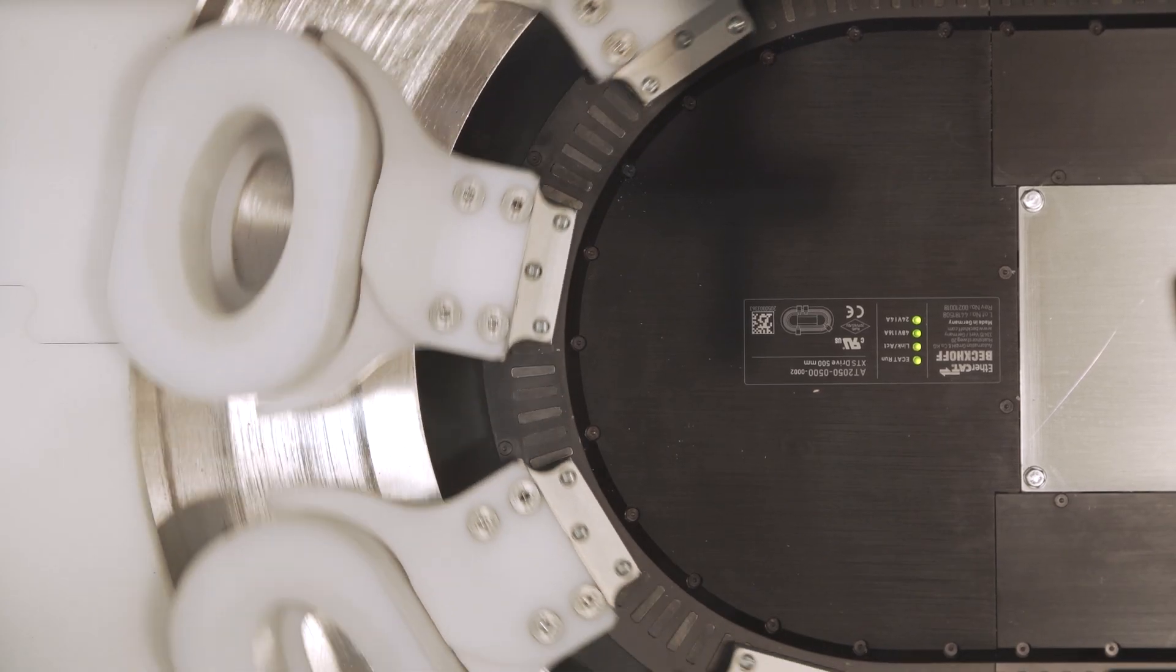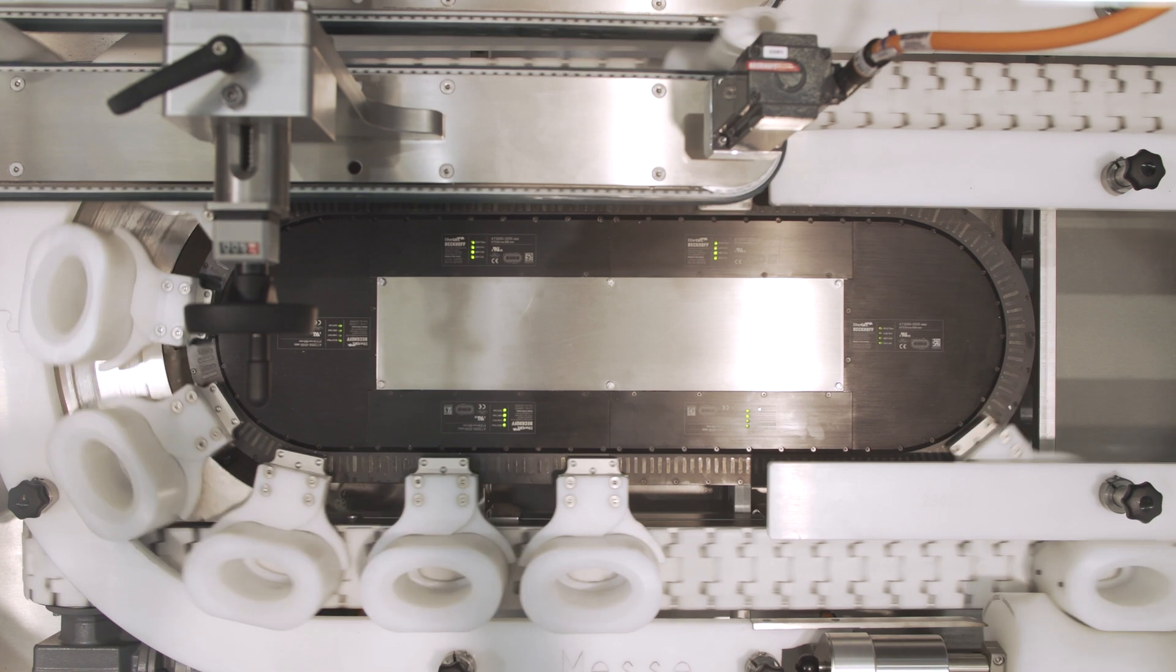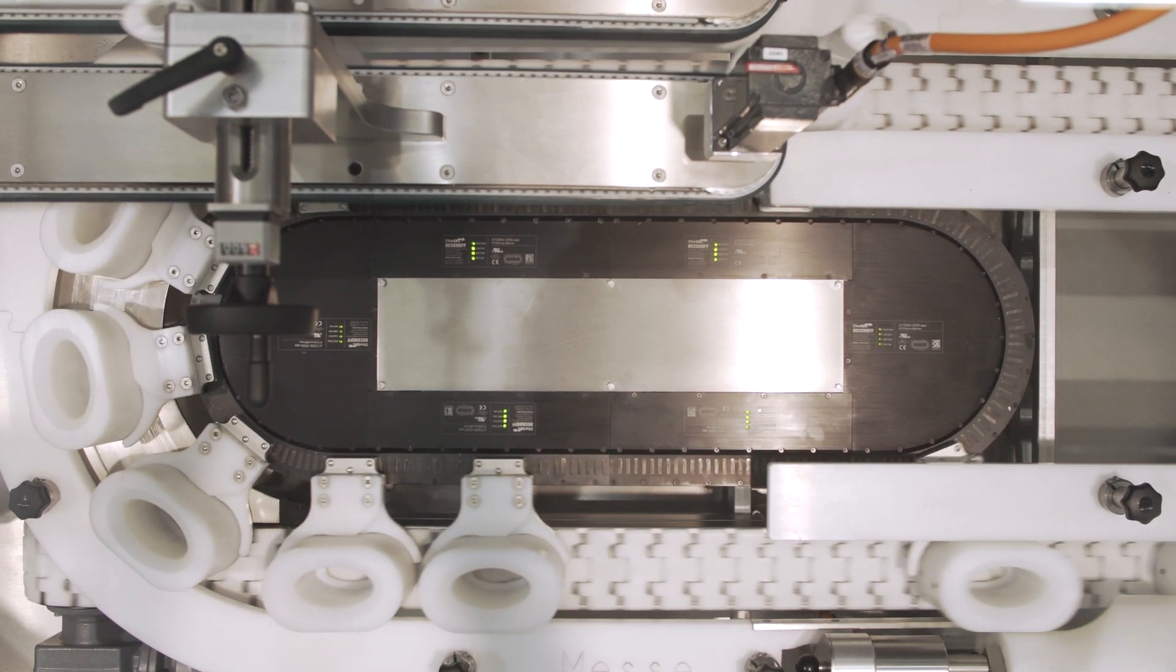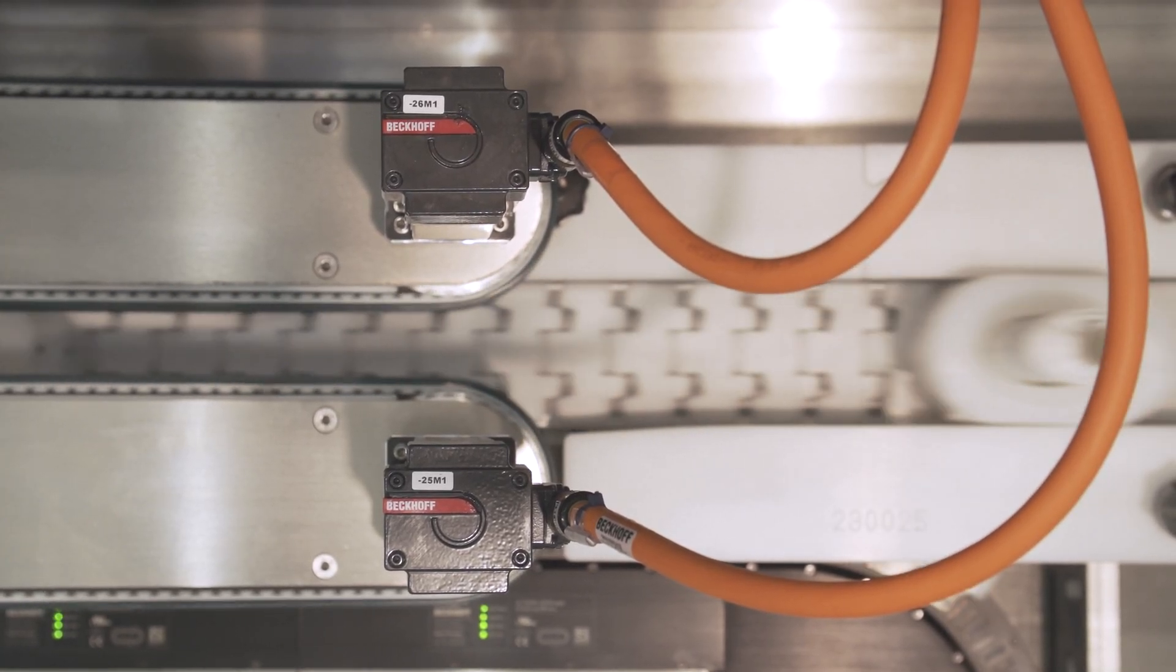For example, the XTS module we are using now is something completely new for us. Here we have a bottle unscrambler which delivers the bottles irregularly and therefore has to be synchronized with the packs. The XTS module is perfect for this purpose.